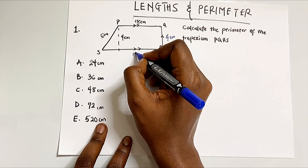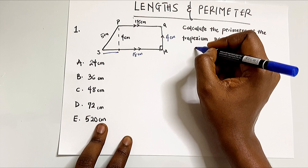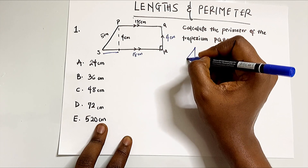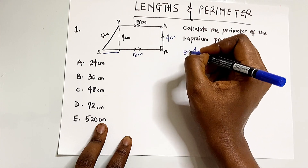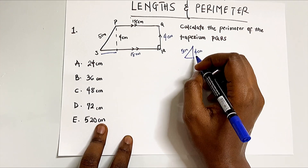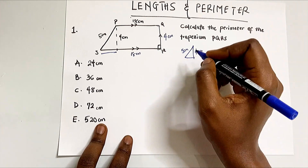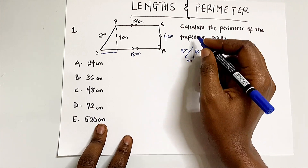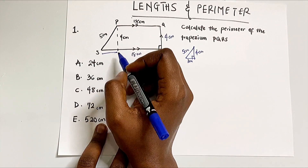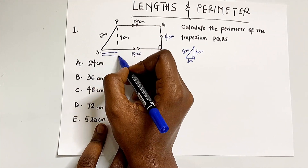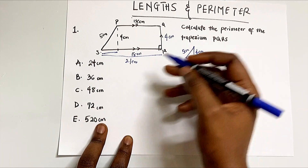I know that the top is 18 cm, which means the bottom parallel side is also 18 cm, but we still need the extra length. Let's sketch out the right-angle triangle: one leg is 4 cm and the hypotenuse is 5 cm. Using Pythagoras' theorem — these are Pythagorean triples — the missing leg is 3 cm. So the full bottom length is 18 + 3 = 21 cm.